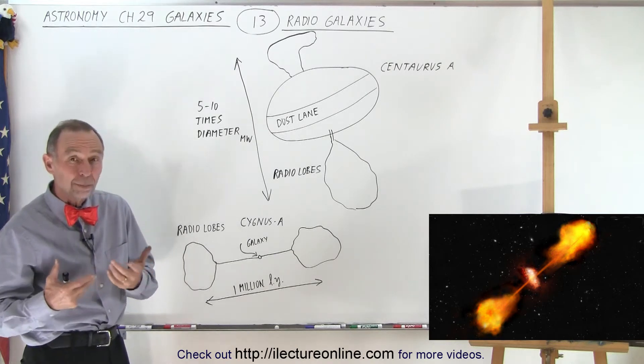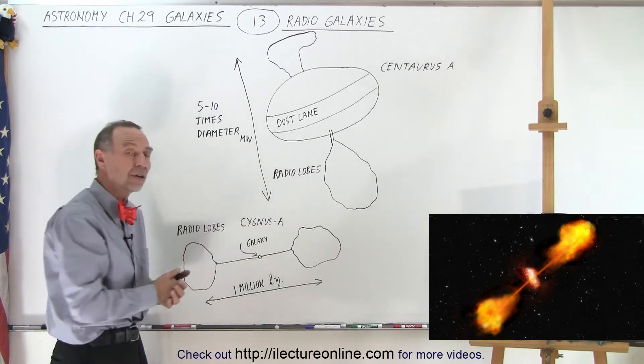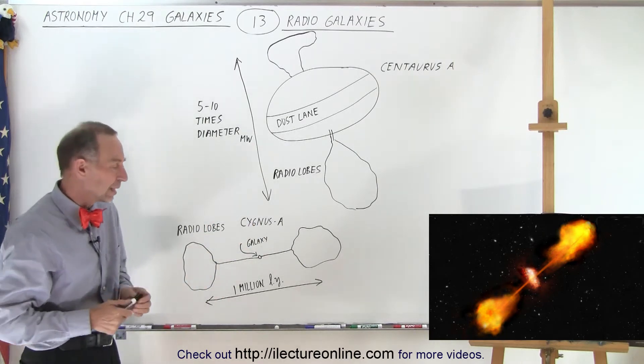So the question is, what produces those radio lobes? And secondly, why is there so much radiation coming from those lobes in the radio radiation bands?